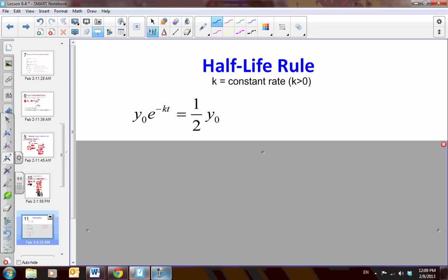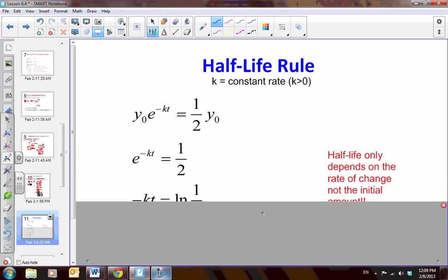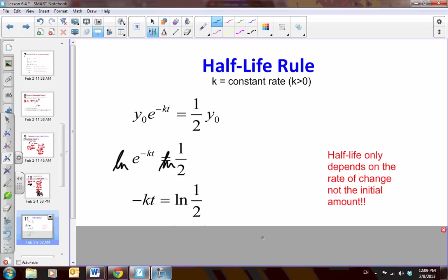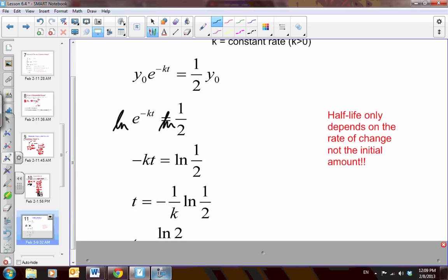We have the initial value, e to the negative kt, and we're looking for half of the initial value. So, when I divide by y sub 0, of course, we get e to the negative kt equals 1 half. And then, we take the natural log of both sides. So, then I have negative kt equals natural log of 1 half. And then, when we divide by negative k, we get the negative 1 over k natural log of 1 half.